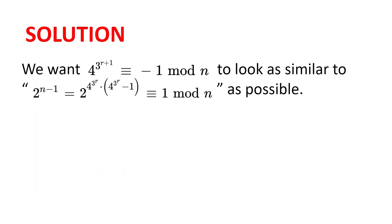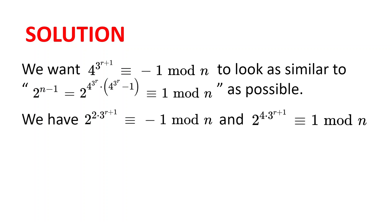We want 4 to the power of 3 to the power of r plus 1 congruent to minus 1 modulo n to look similar to 2 to the power of n minus 1, which equals 2 to the power of 4 to the power of 3 to the power of r times 4 to the power of 3 to the power of r minus 1, congruent to 1 modulo n, since we are trying to show that 2 to the power of n minus 1 is congruent to 1 modulo n. So we may rewrite 4 to the power of 3 to the power of r plus 1 congruent to minus 1 modulo n as 2 to the power of 2 times 3 to the power of r plus 1 congruent to minus 1 modulo n. Squaring both sides, we get 2 to the power of 4 times 3 to the power of r plus 1 is congruent to 1 modulo n.